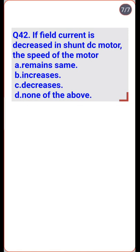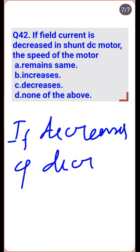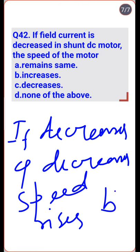If field current is decreased in a shunt DC motor, the flux decreases. Since speed is inversely proportional to flux, the speed rises — so option B is the right one.